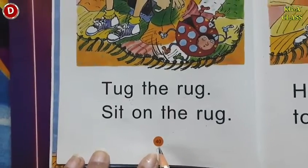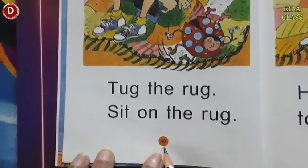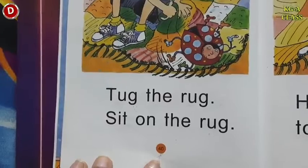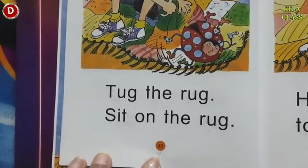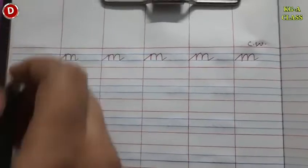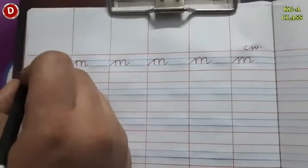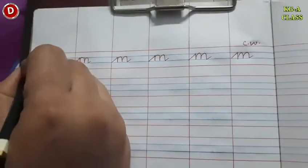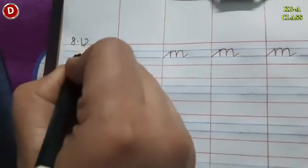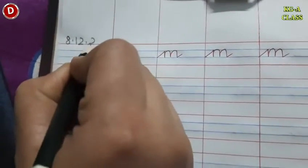Okay? So read the story from page number 33 to 40 and make your video and send it to me. Children, today again we will do practice of writing cursive M. First, we will write today's date — today is 8th December 2021.